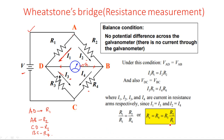The unknown resistance R4 (also written as Rx) is given by the formula: R4 = R2·R3 / R1. By convention, the unknown component — whether resistance, capacitance, or inductance — is always connected at the fourth arm of any bridge circuit. This avoids confusion and makes it easy to interpret the bridge regardless of who sets it up.